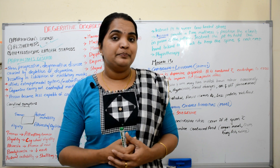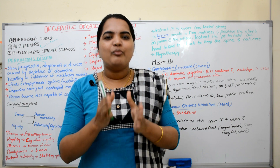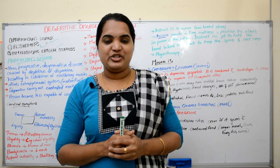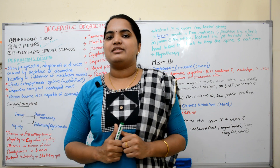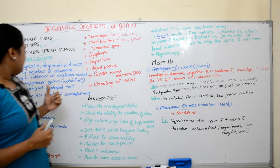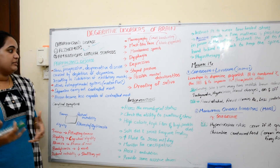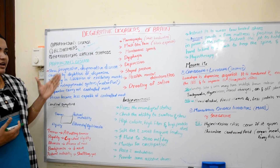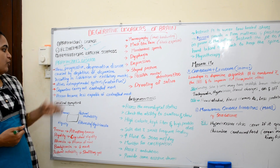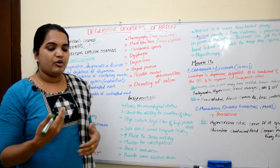If there is dopamine depletion, there will be loss of motor functions and slow movements. This is what happens in Parkinson's disease due to dopamine deficiency. It is a slow, progressive degenerative disorder caused by depletion of dopamine, which is responsible for controlled movements.